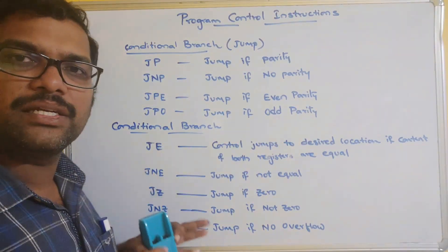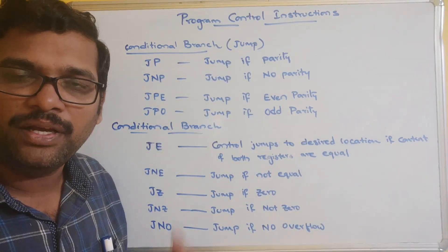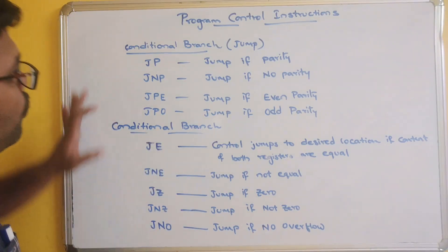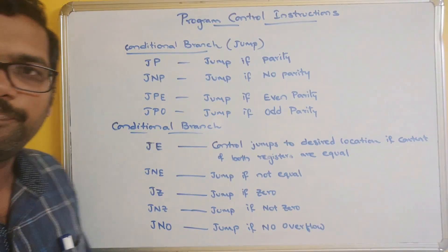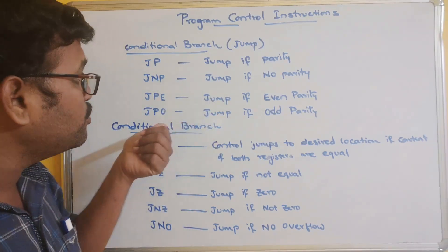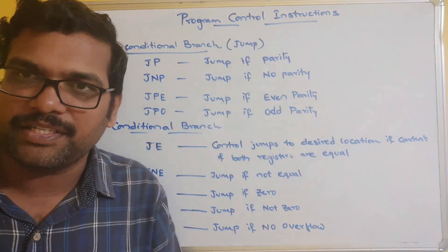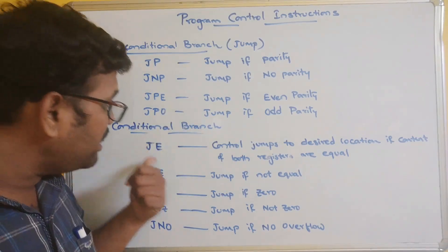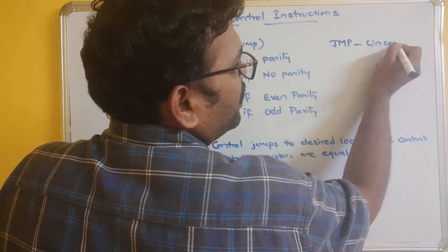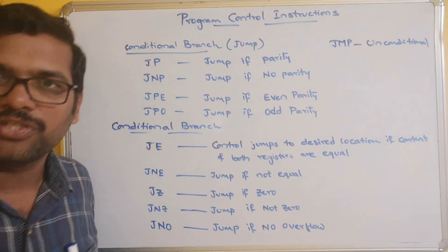These are all the different instructions which check a condition and change the position of execution — JE, JNE, JZ, JNZ, JNO, JP, JNP, JPE, and JPO — all of these are called jump instructions. Since we are using some conditions, we call them conditional jumps or conditional branch statements. Without any condition, just using jump, we call it unconditional branch.